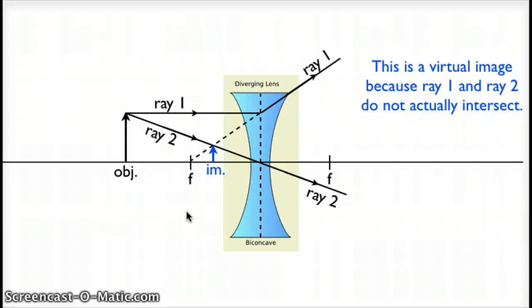If we did want to do the lens equation for a situation like this, let's just check what variables are positive and what variables are negative. This is a diverging lens, so the focal length will be negative. Our object is over on the virtual side where we expect the object to be. So our object distance is positive.